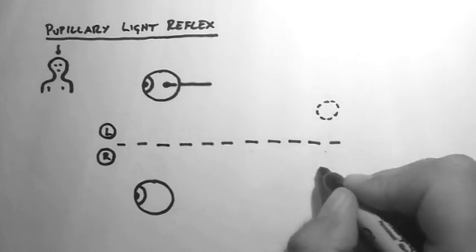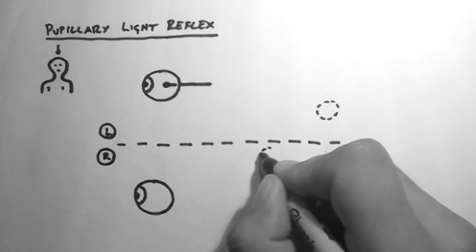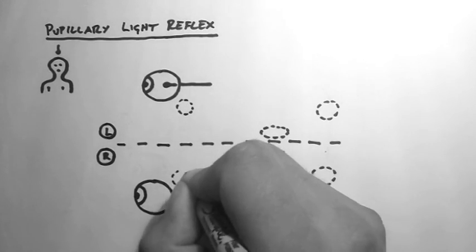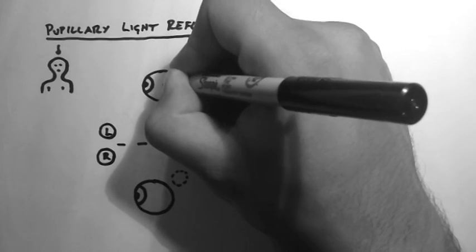Now I'm just going to draw in the main nuclei and locations of cell bodies involved. So I'll label these now.